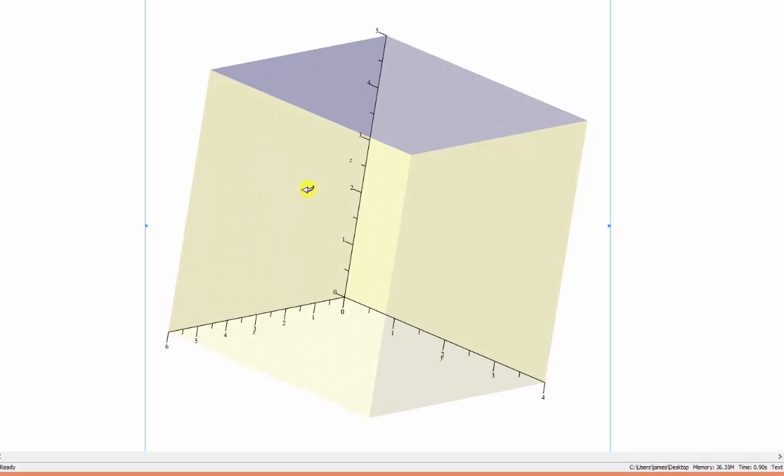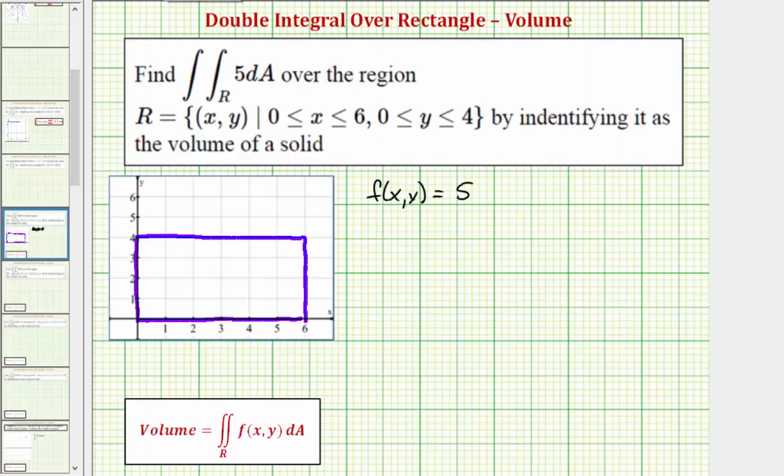The volume would be equal to the length times the width times the height, or the area of the base times the height. Going back to our work using a geometric formula, the value of the double integral over the region R is equal to the area of the base times the height,